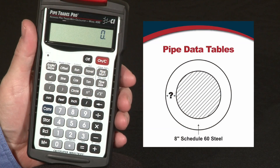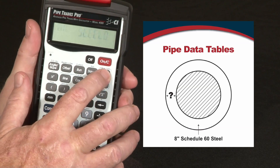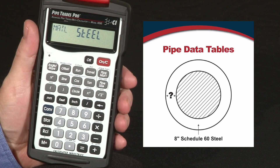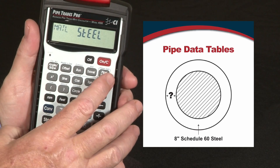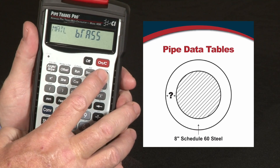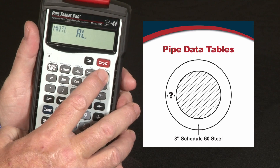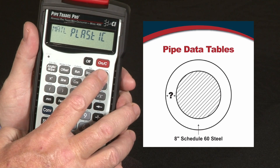Now I want to show you the built-in pipe data tables of the Pipe Trades Pro. There are seven material types built into the calculator. Simply press the pipe material key and you'll see the first of the seven: steel. Continued presses will show you the rest of the materials — stainless steel, brass, aluminum, cast iron, plastic or PVC, and copper.